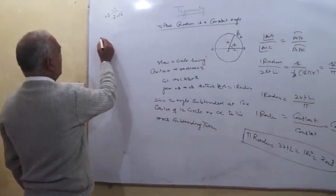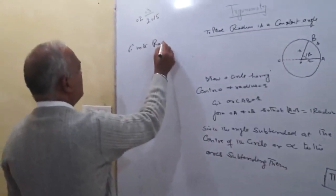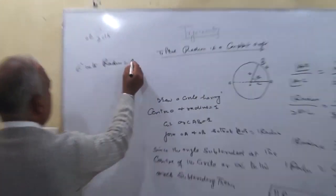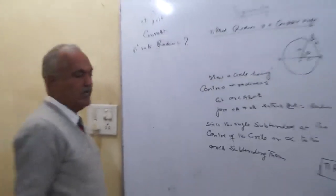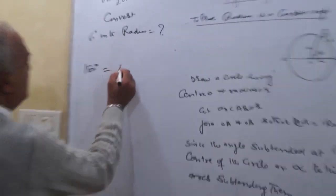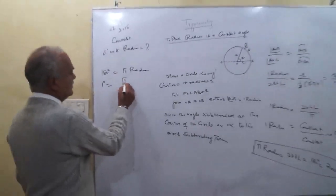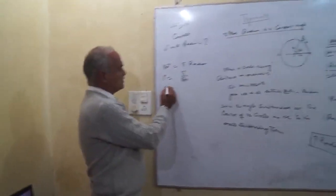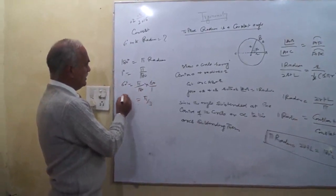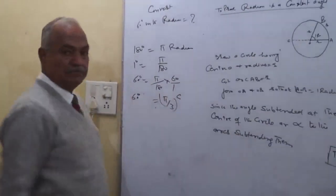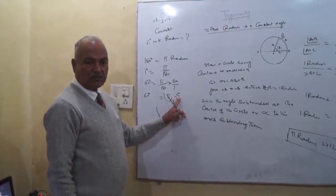Now convert 60 degrees into radian. We know 180 degrees is equal to pi radian, so one degree equals pi over 180. Therefore, 60 degrees equals pi upon 180 multiplied by 60, which gives pi by 3 radian. So 60 degrees is equal to pi by 3 radian. Here, C means radian or circular measure.